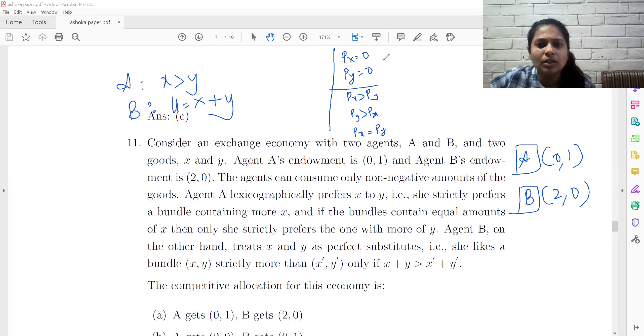Or both will be equal. Now equal to 0 is not possible in this case because then both the agents would want unlimited amount of goods. So equal to 0 is not possible.